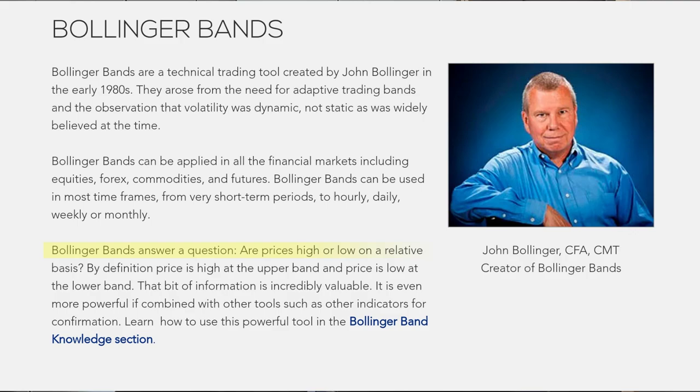Bollinger Bands show basically extreme points in the market — similar to what the RSI does — showing the highs and the lows. We'll look at the chart later in this video to discuss that in more detail. You can also use them for volatility, to see how far the market goes, and that can help you make better decisions on whether to enter trades or not. You can use it as a tool to enter trades or to evaluate the market, find out how much the market moves, and even set targets. As John Bollinger's website says: Bollinger Bands answer the question — are prices high or low on a relative basis? The upper band and lower band show extremes, and the middle is the average.